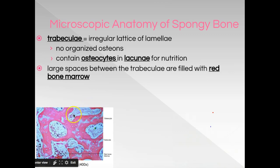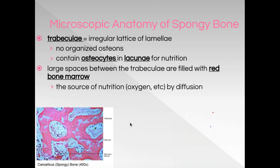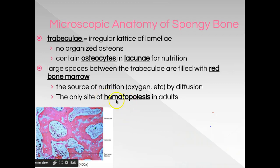Here you can see a structure that has a little dot inside it — that little dot is the osteocyte sitting in the lacuna. The spaces between the trabeculae contain red bone marrow, and red bone marrow is important because it is the site of hematopoiesis — the formation of blood. 'Hema' means blood, 'poiesis' means formation, so we're specifically referring to the formation of red blood cells.